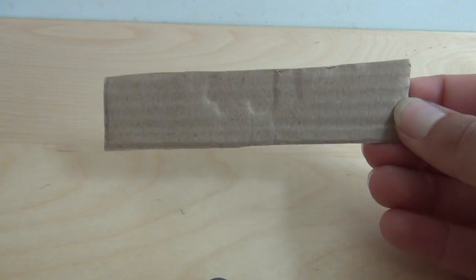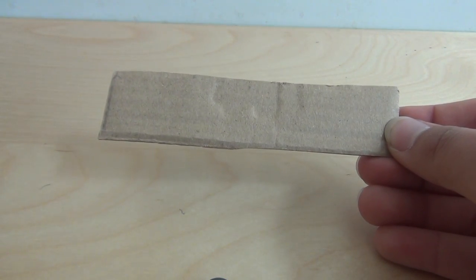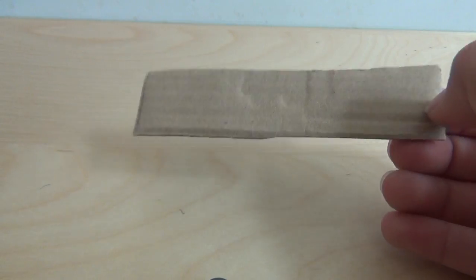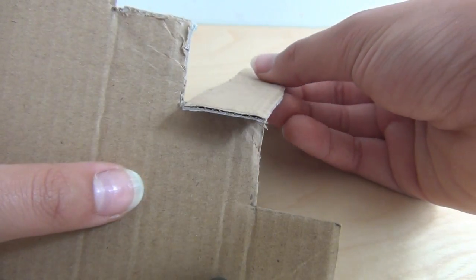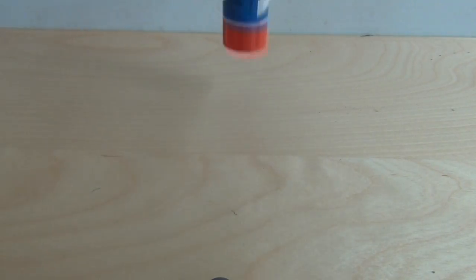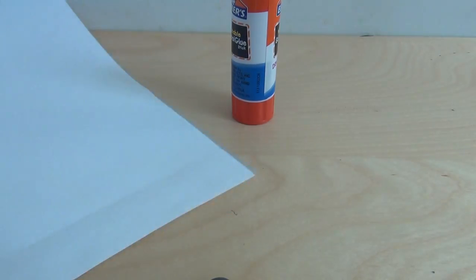Now, cut out slim rectangles that are as wide as you want your steps to be and that can fit on top of your staircase. Now, using glue, cover everything in paper.